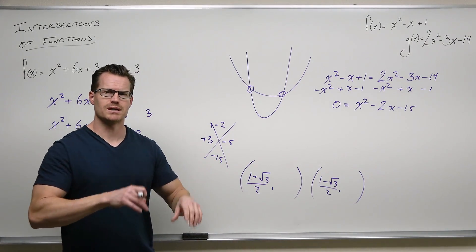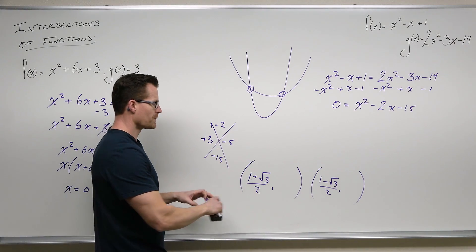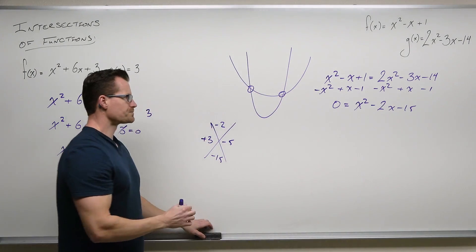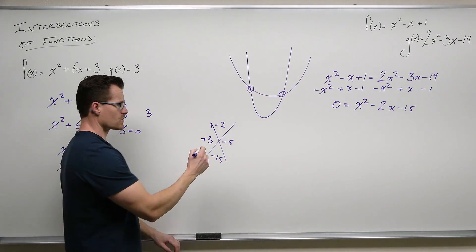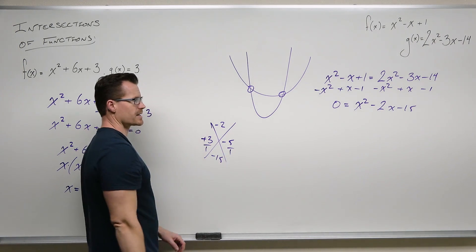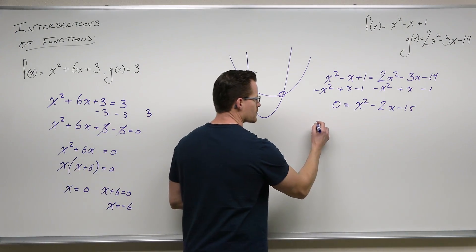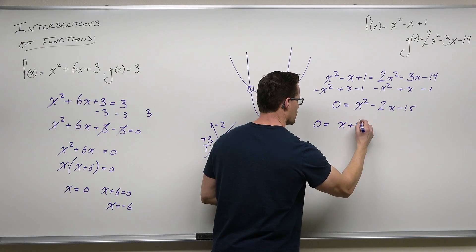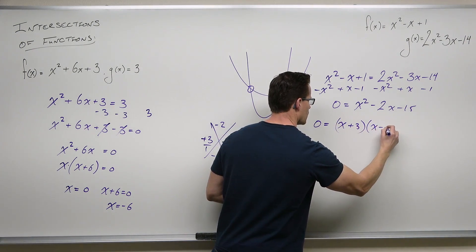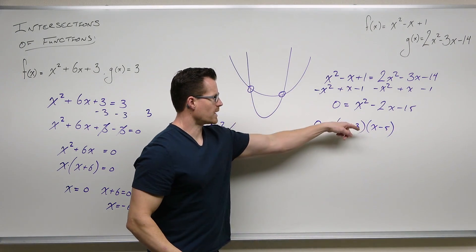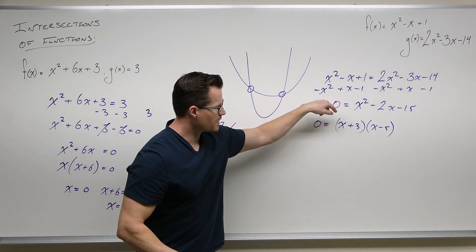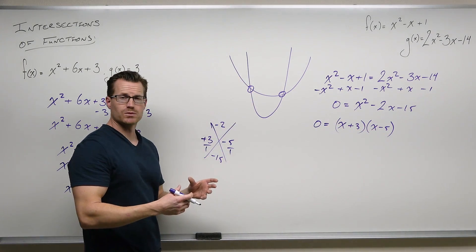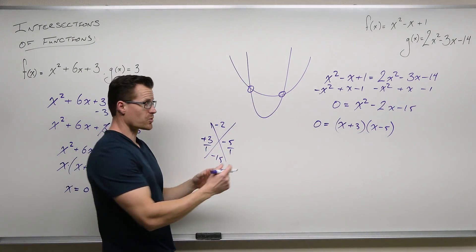Unless they specifically tell you to use approximations, then do that. For us, since this is factorable and our a is 1, which gives us something really nice with a great shortcut, we can double-check our work: x squared minus 5x plus 3x is minus 2x, and then minus 15. Set both factors equal to zero by the zero product property.